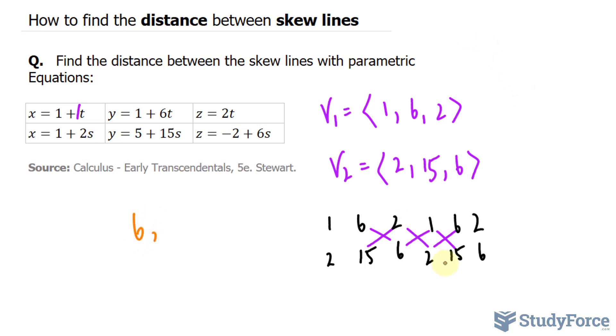2 times 2 is 4, minus 6 is negative 2. 2 times 15 is 15, minus 12 is 3. So this right here is the cross product vector of V1 and V2. So keep in mind that this vector is perpendicular to V1 and V2.